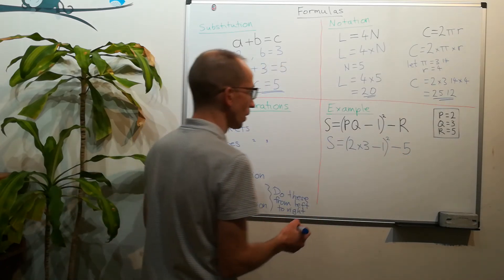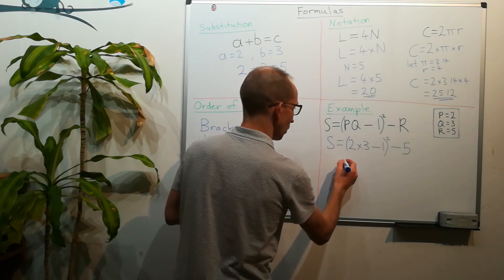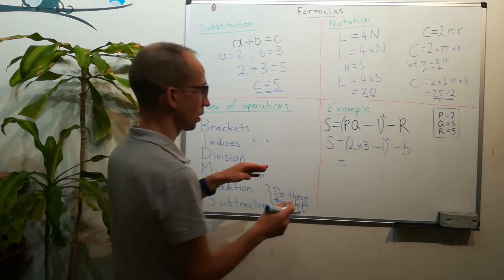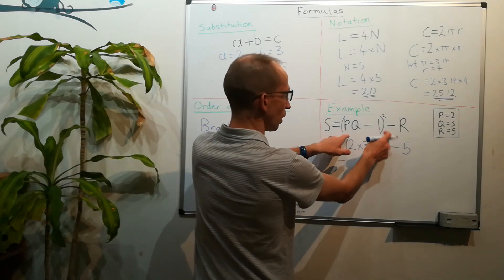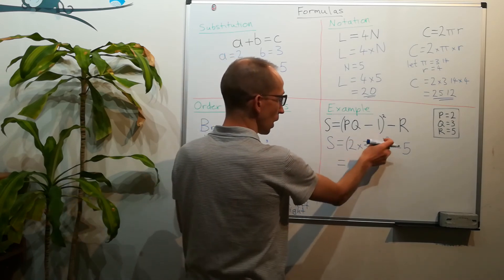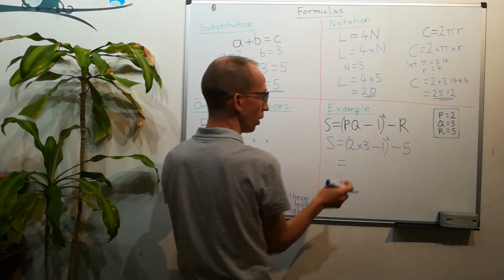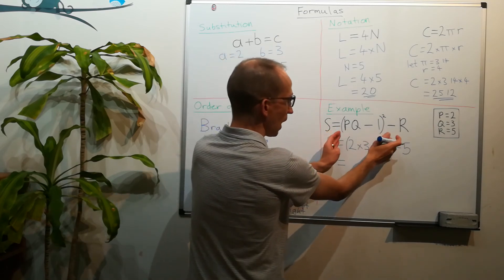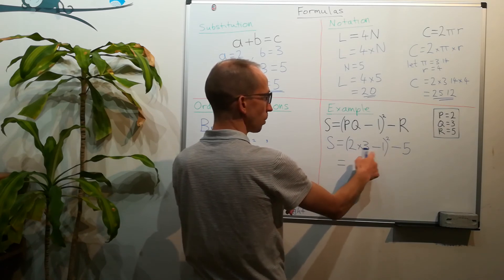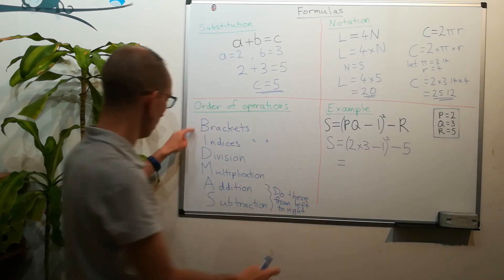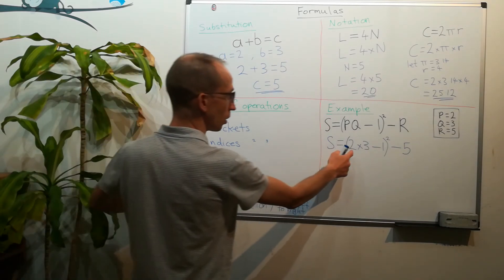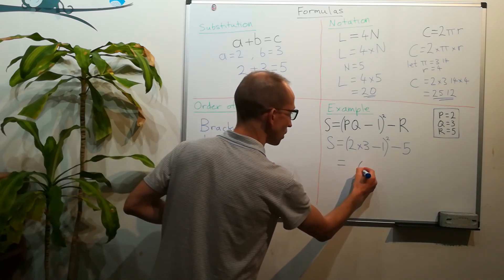So that means inside the brackets. So we're going to ignore that squared sign for now, we're just looking at this 2 times 3 minus 1. So out of that bit, what do we do first? The multiply or the subtract? Well multiplication is here, subtraction is down here. So the first thing we do is 2 times 3, and that is 6.